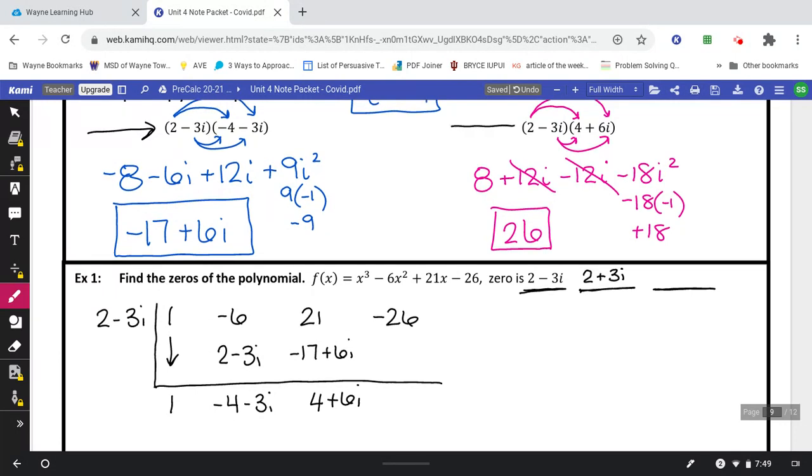Then you would multiply 2 minus 3i times the 4 plus 6i. But look, on our warm-up we already did that as well. So we can just write our answer of positive 26. Back at 2, 0, which is what we needed to get. If we didn't get 0, we would have to start over.